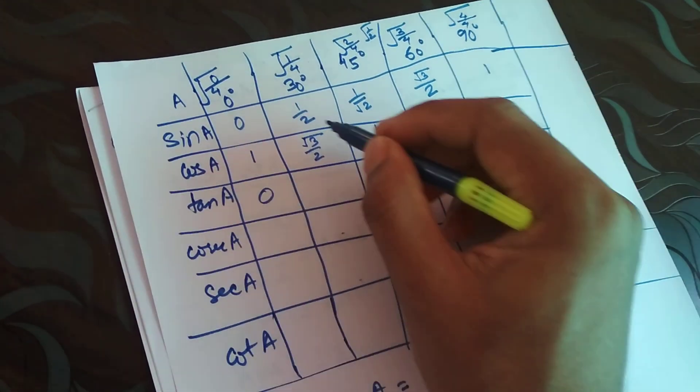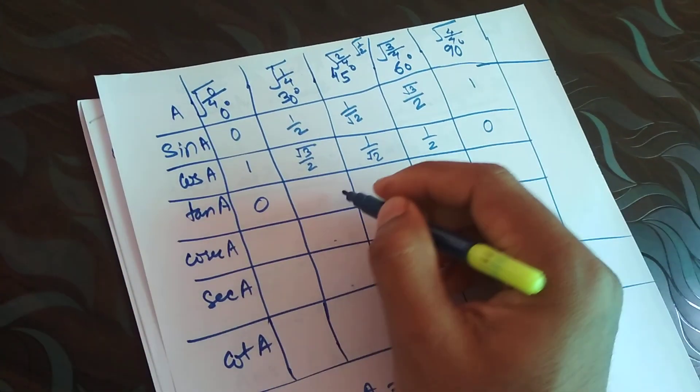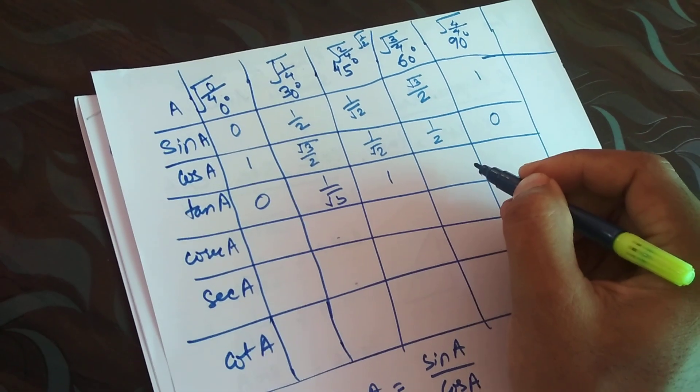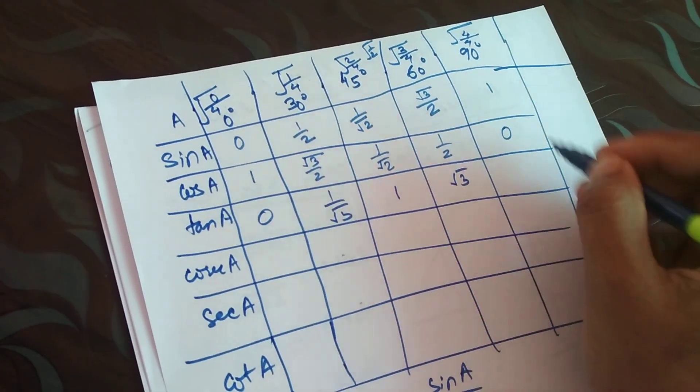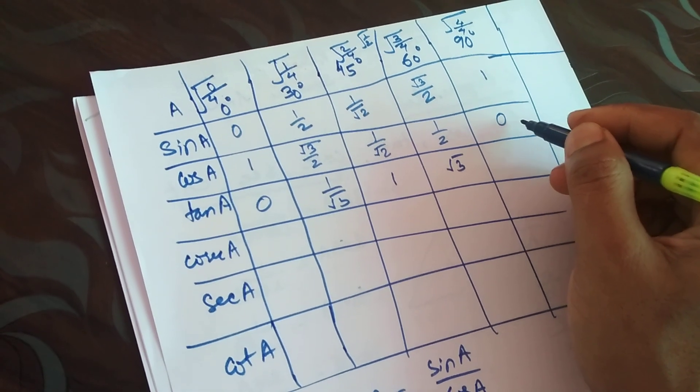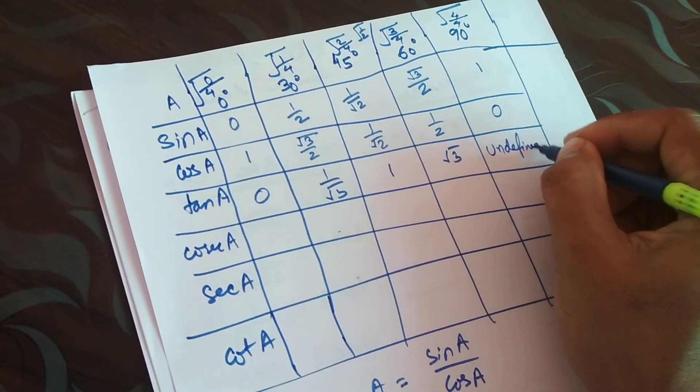0 by 1 is 0. 1 by 2 divided by root 3 by 2, I'm supposed to get 1 by root 3. This is the same thing, we'll get 1, then root 3. This looks like 1 divided by 0. 1 divided by 0 is undefined.